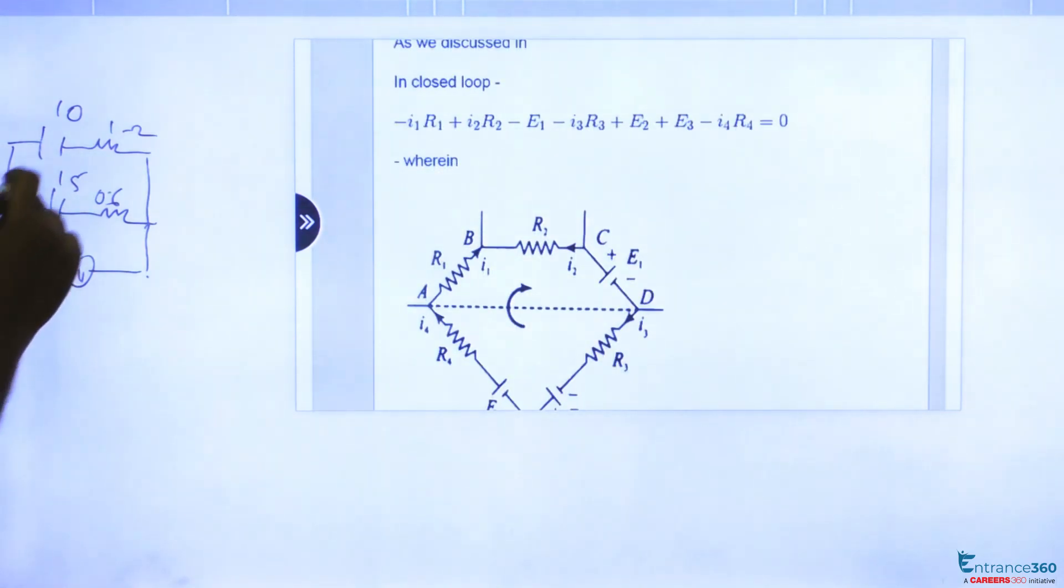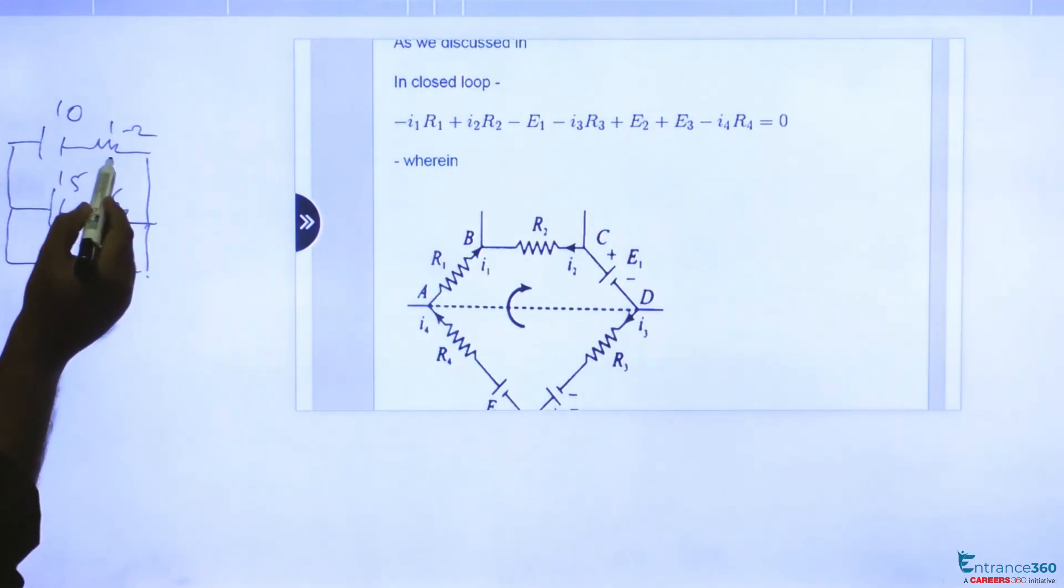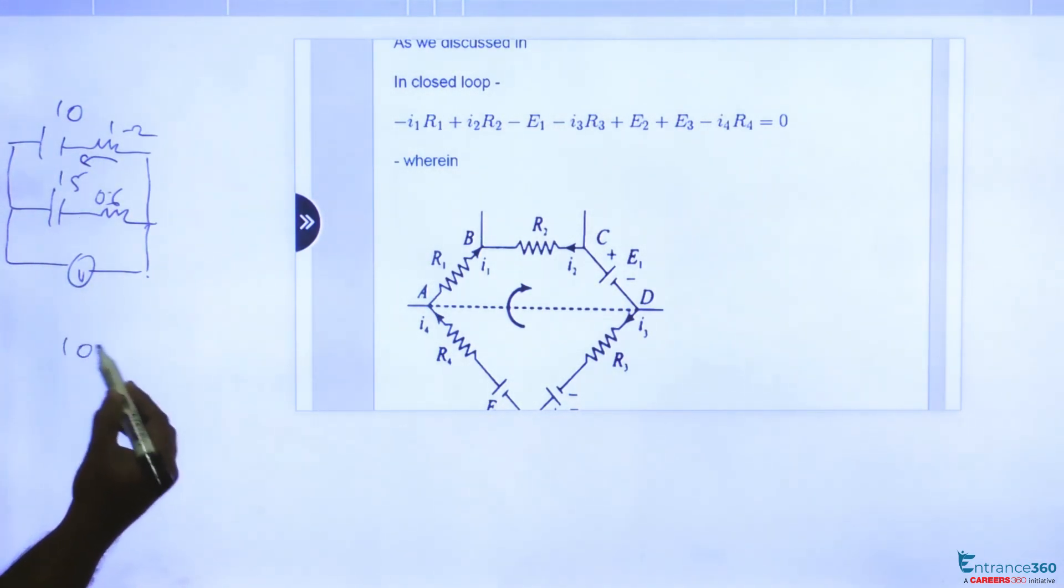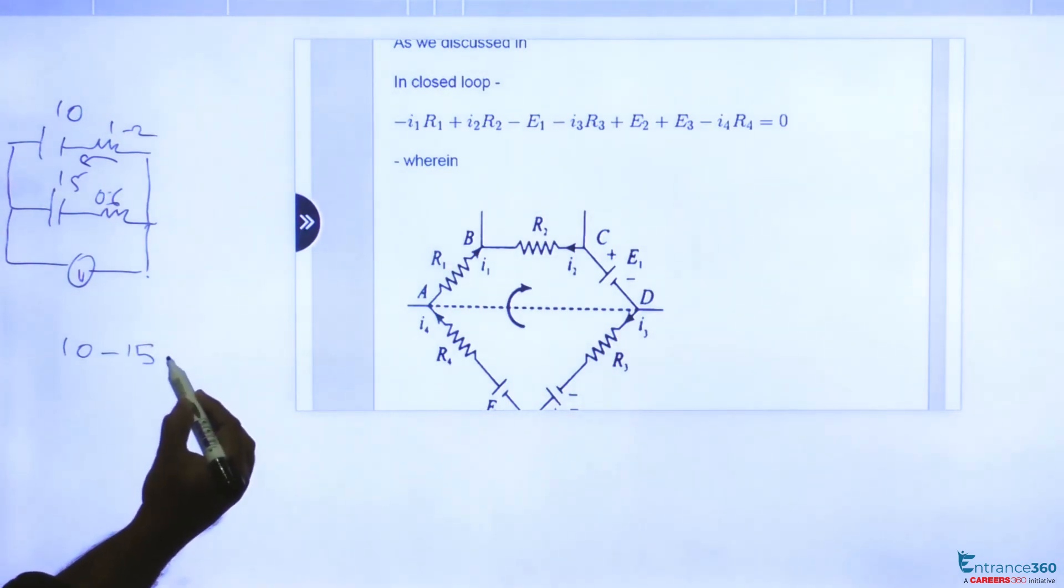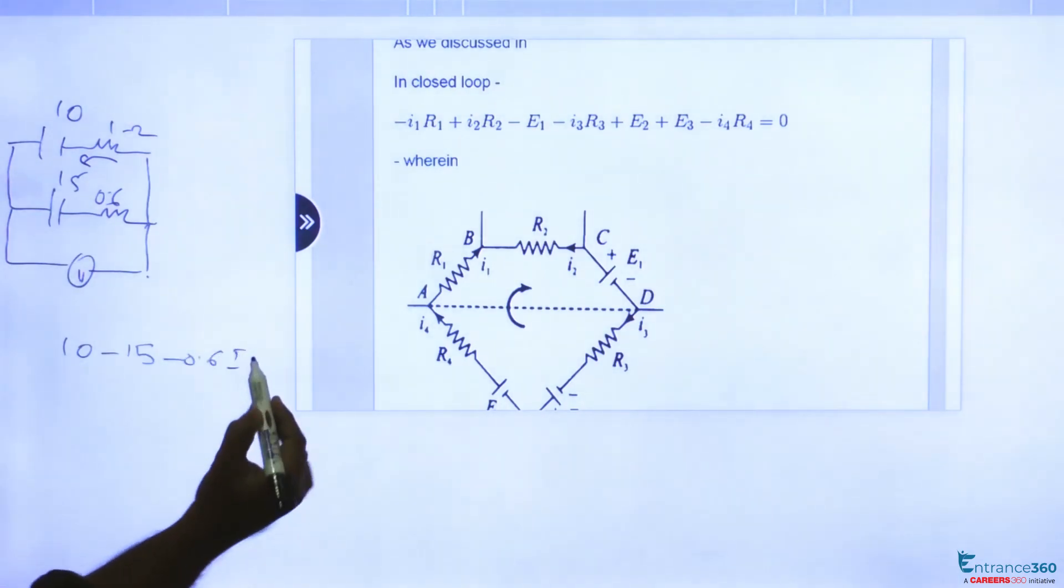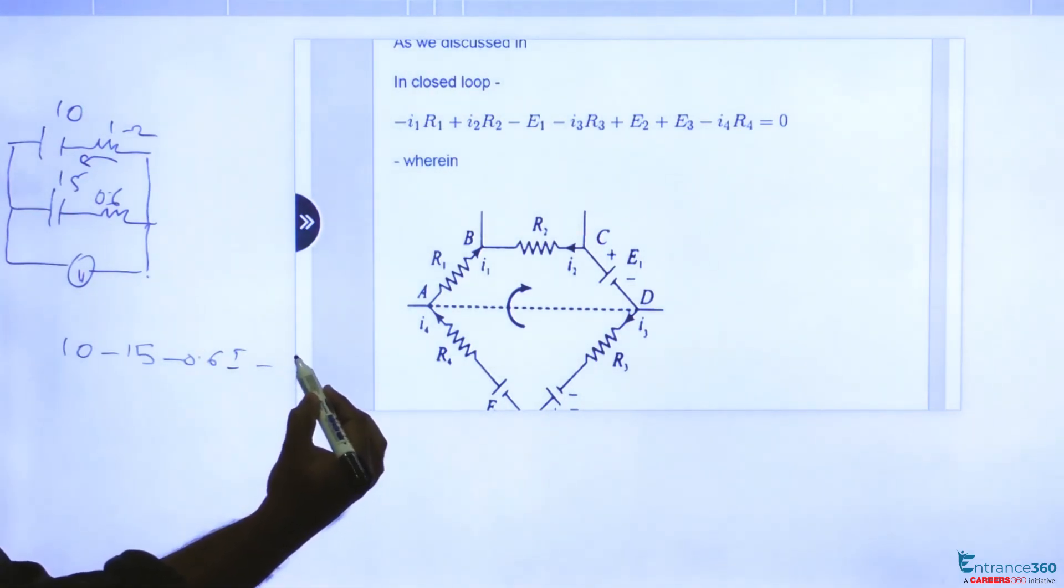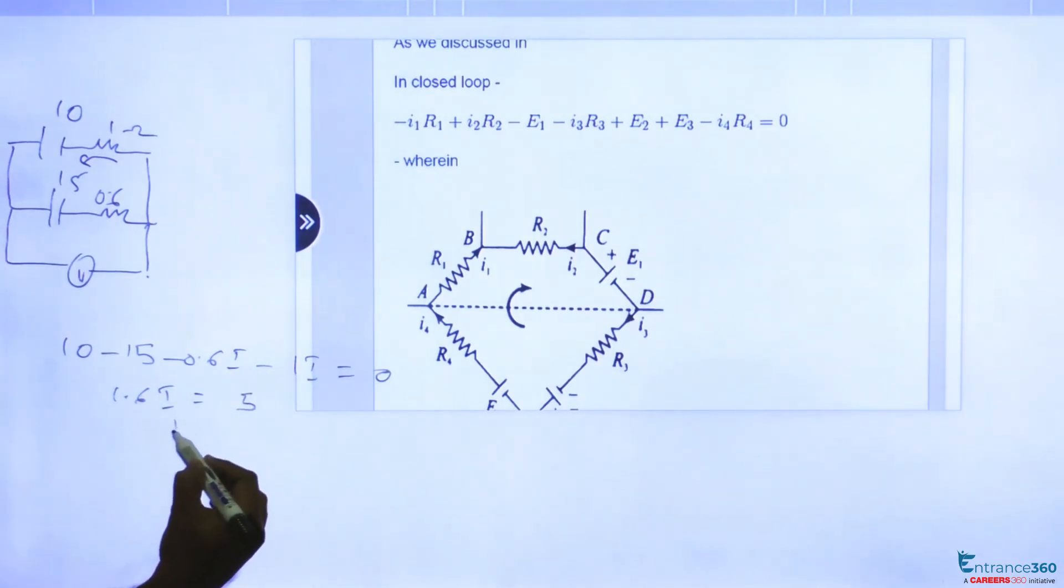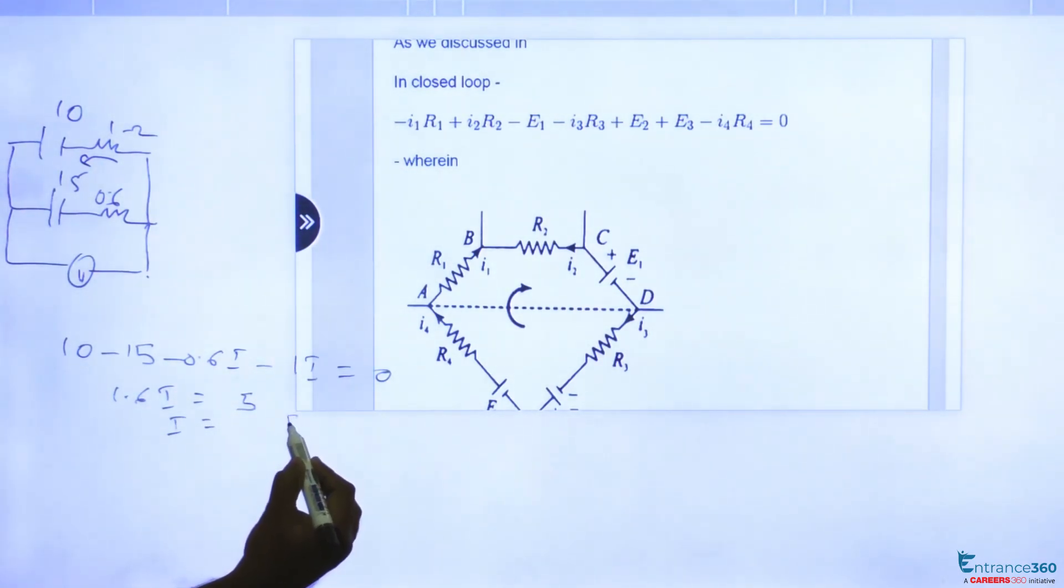Let's consider this loop and moving in this direction. We will get 10 - 15 - 0.6i - 1i = 0, assuming the current in this loop is i. So we get 1.6i = 5, or i = 5/1.6.